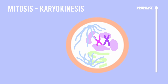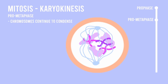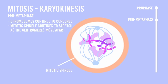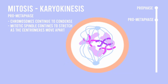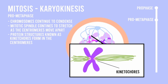After the prophase, we have the prometaphase. During the prometaphase, the chromosomes continue to condense, and the mitotic spindle continues to stretch across the nucleus as the centrosomes continue to move apart. Protein structures known as kinetochores form at the centromeres of the chromosomes and function by attaching the chromosomes to the microtubules of the mitotic spindle.